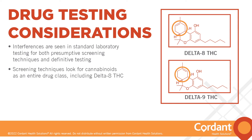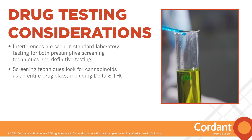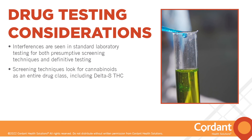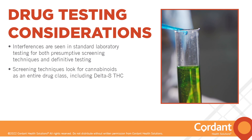Can delta-8 THC use cause a positive delta-9 THC result? The answer is complex and may vary lab to lab. As discussed, delta-8 and delta-9 are very structurally similar, with only the placement of a single double carbon bond differentiating the two. For the initial test, the standard screening by immunoassay looks for multiple cannabinoids — several of them, naturally occurring or otherwise, could cause a cross-reaction on the screening instrument to cause a positive result.